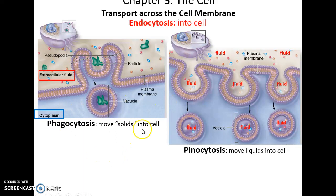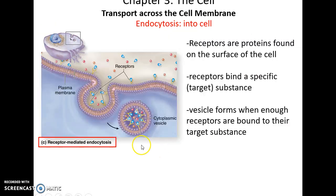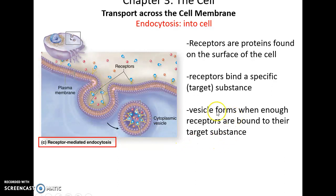Endocytosis comes in three main forms. There is phagocytosis, where a large structure or solid is brought into the cell — the cell membrane forms pseudopods that wrap around the target material, eventually forming a vesicle that pinches off into the cell. Pinocytosis is where the cell forms vesicles filled with the fluid surrounding the cell, just sampling fluids outside and bringing them in. Receptor-mediated endocytosis is where receptor molecules bound to the surface of the cell membrane bind to their target structure, and if enough are bound, that area of the cell membrane invaginates inward, forming a vesicle inside the cell to bring in special materials the cell finds valuable but difficult to find.